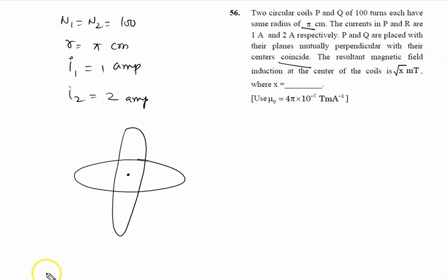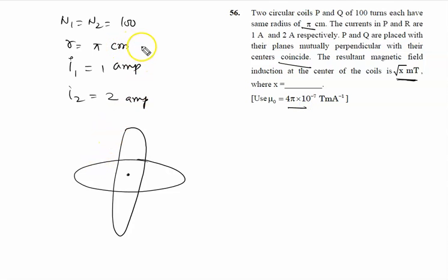The resultant magnetic field induced at the center of the coil is root x milli-tesla — note it is in milli-tesla, not tesla. We will have to convert the radius π centimeters into π into 10 to the power minus 2 meters. Now we will see the answer.